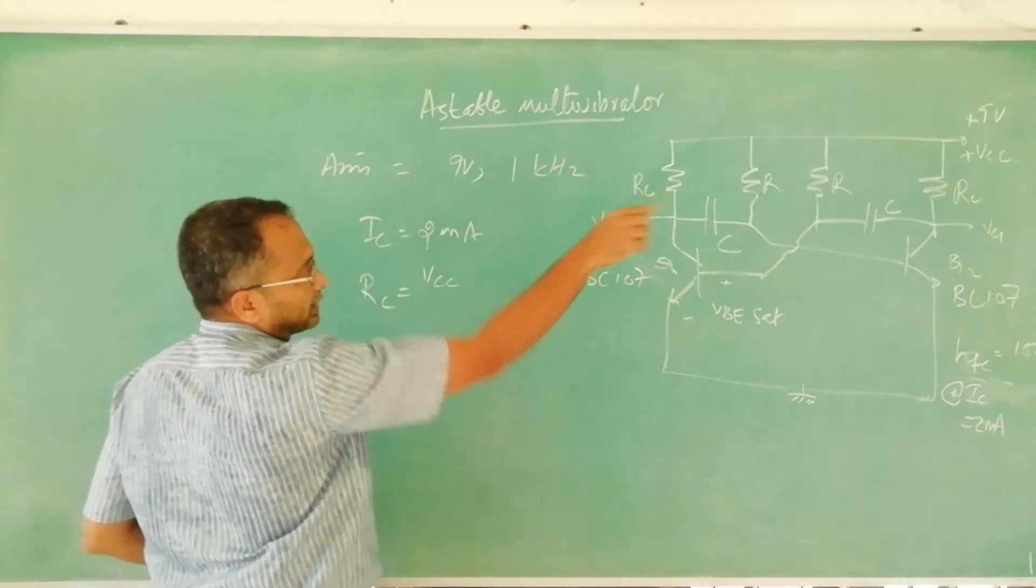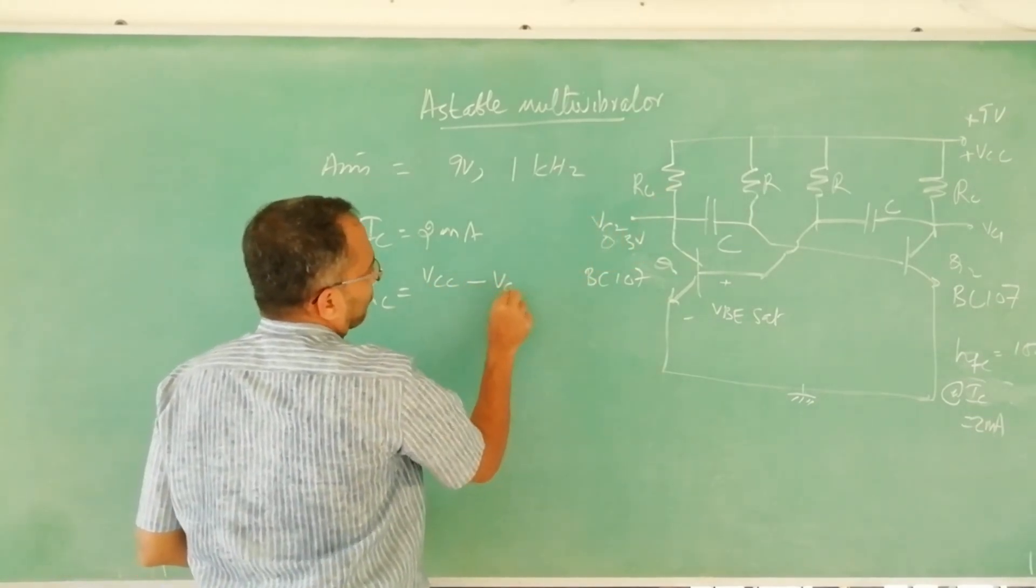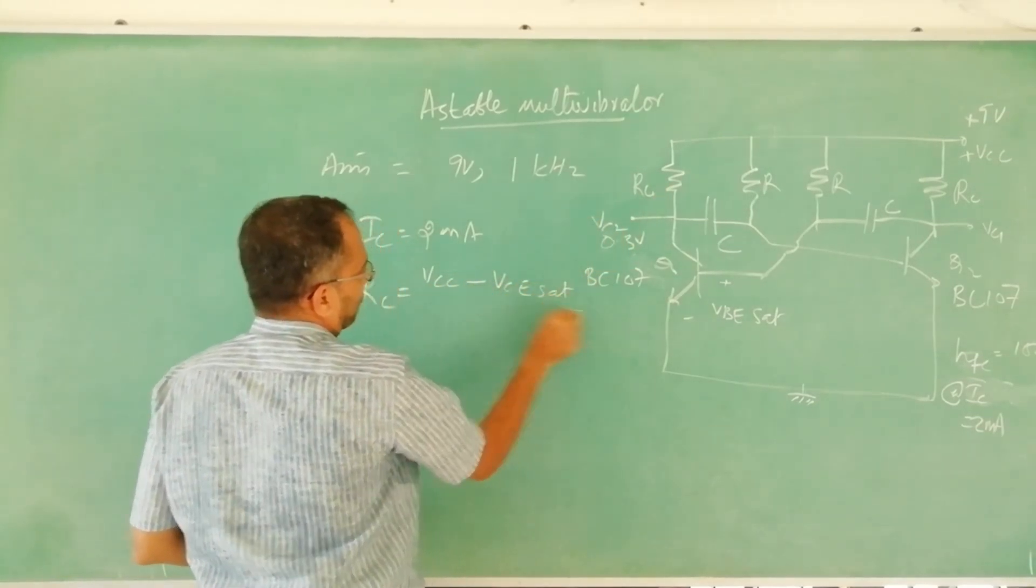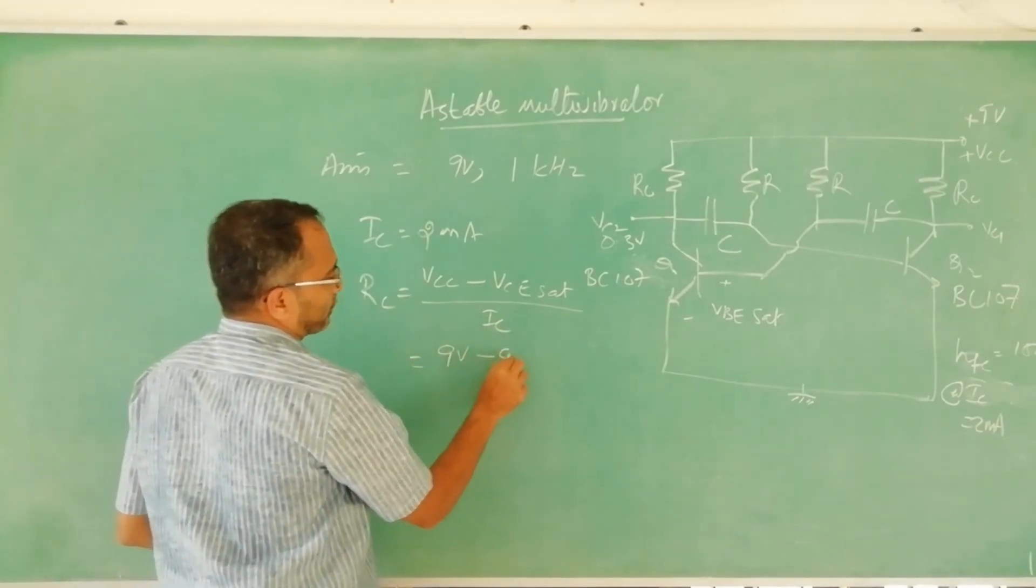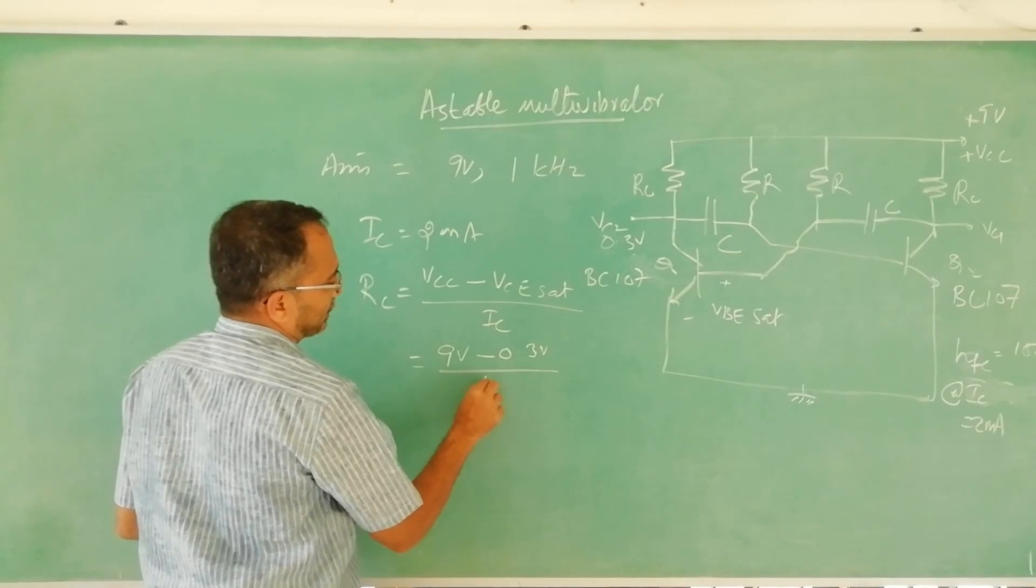So now we can calculate RC as VCC that is 9 volt minus VCE saturation by IC. This is nothing but 9 volt minus 0.3 volt by 2 milliampere.